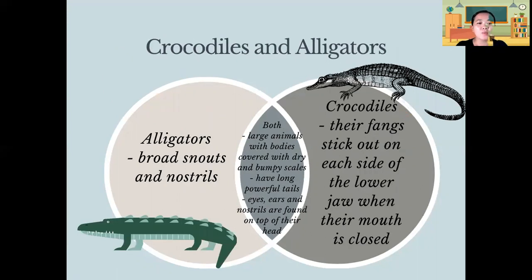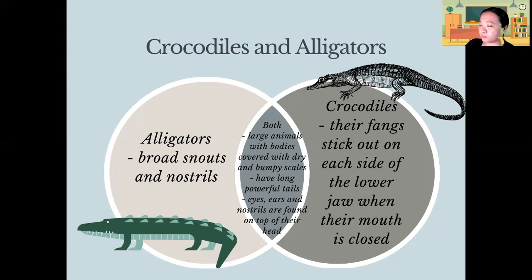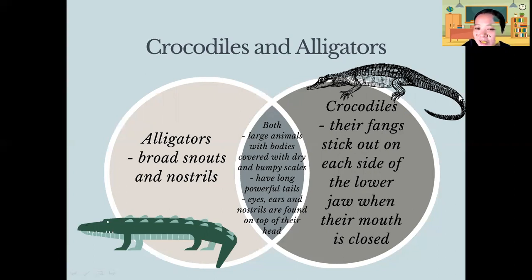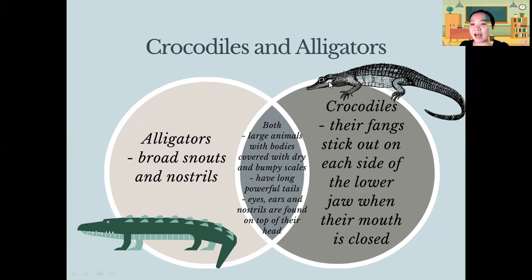Next, we have alligators and crocodiles. Alligators have a broad snout and nostrils, while crocodiles have fangs that stick out on each side of the lower jaw when their mouth is closed. Both alligators and crocodiles are large animals with bodies covered with dry and bumpy scales. Both have powerful tails, and both have eyes, ears, and nostrils found on top of their head.